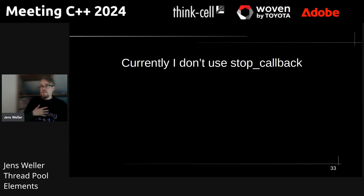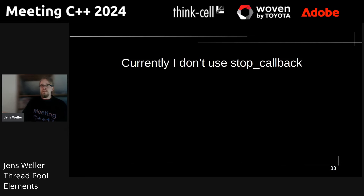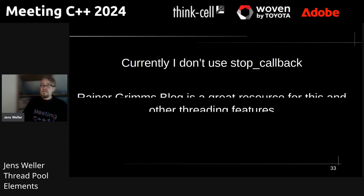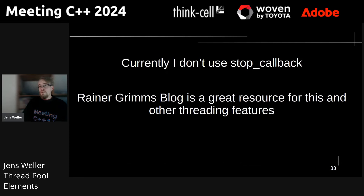I currently do not use stop_callback in my implementation. I'm not sure what it would be most useful for in a simple thread pool. I haven't seen a great usage example for this, but Rainer Grimm's blog is a great source for this and other threading features in general — I want to give him a shout-out here.